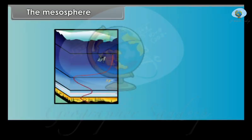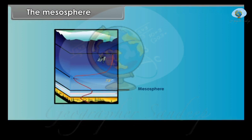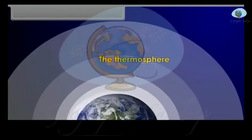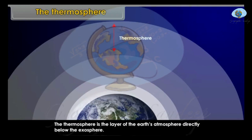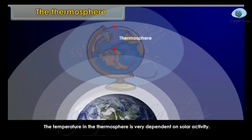The mesosphere is the third, or middle, layer of the atmosphere. Its average height is about 80 km. Its upper boundary is called the mesopause. Meteorites burn up in this layer on entering from space. The thermosphere is the layer of the Earth's atmosphere directly below the exosphere. Within this layer, ultraviolet radiation causes ionization. The temperature in the thermosphere is very dependent on solar activity.